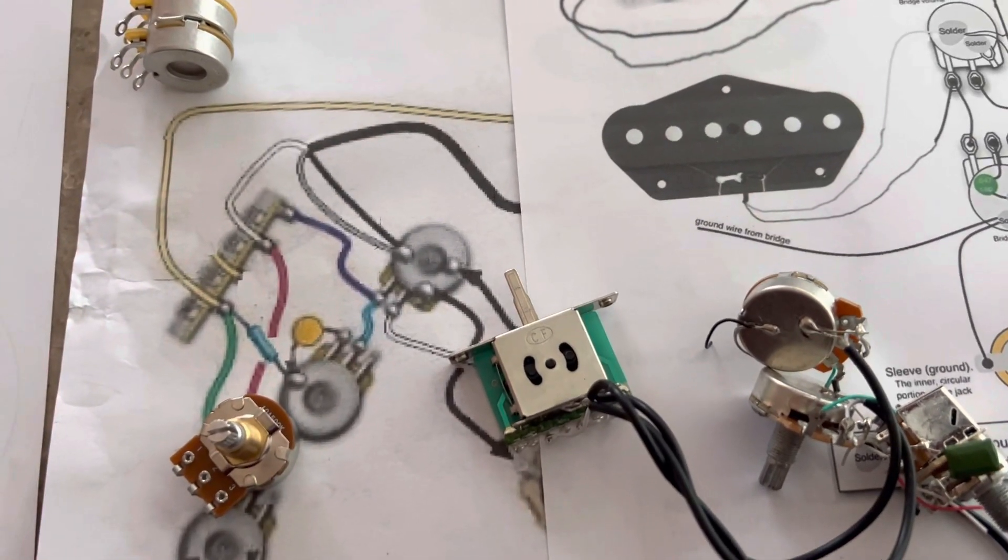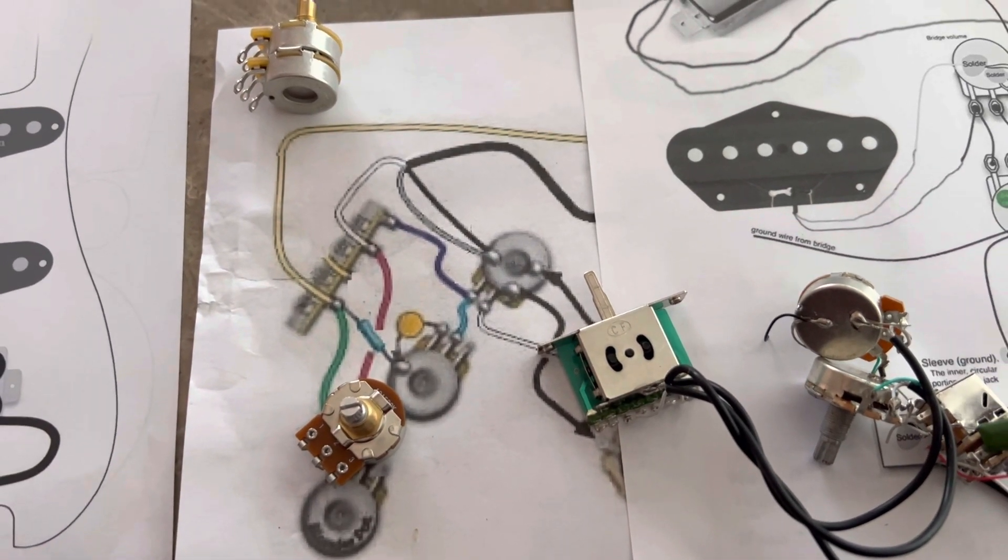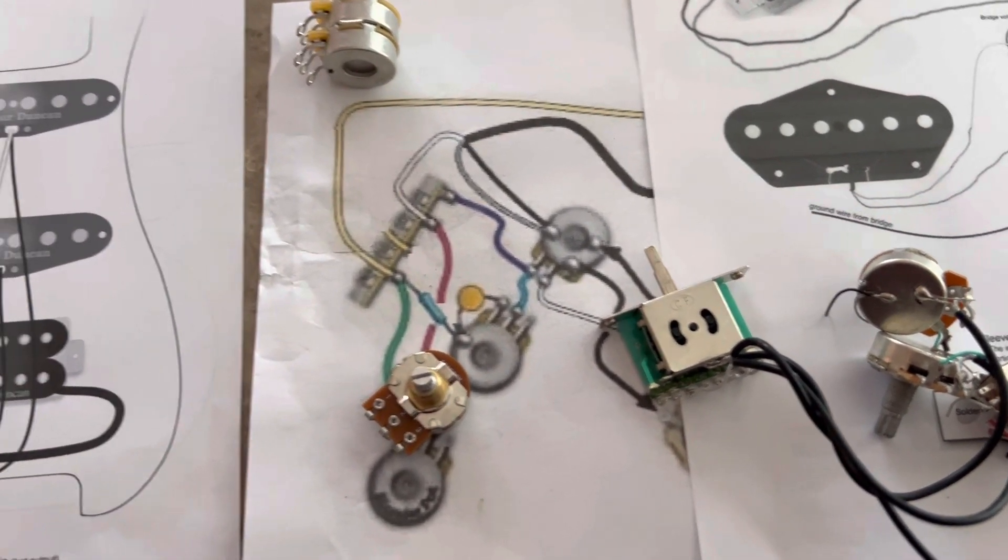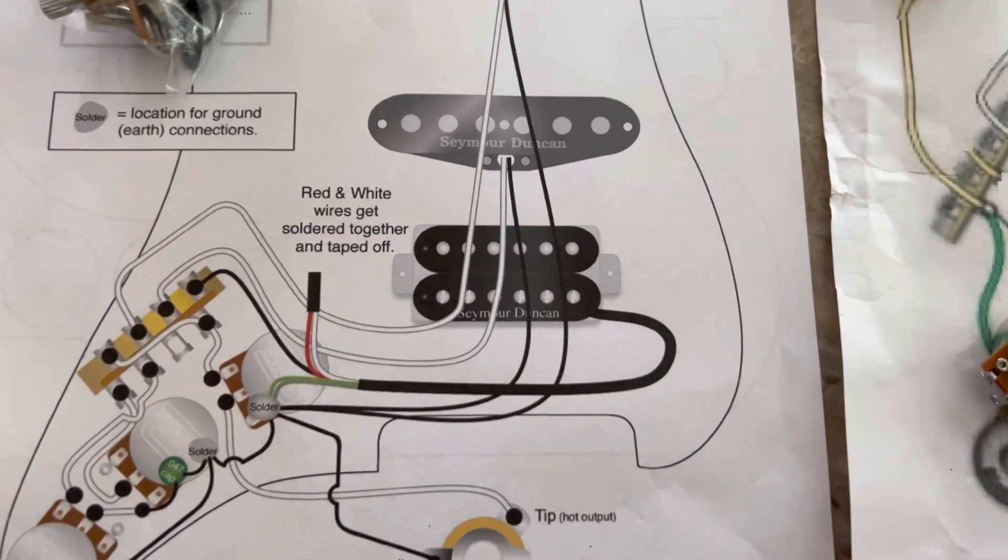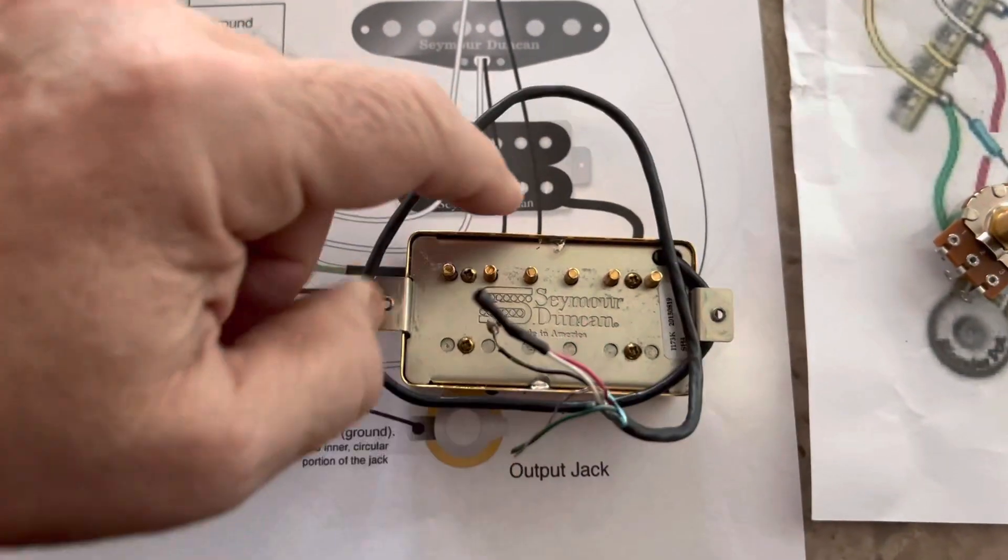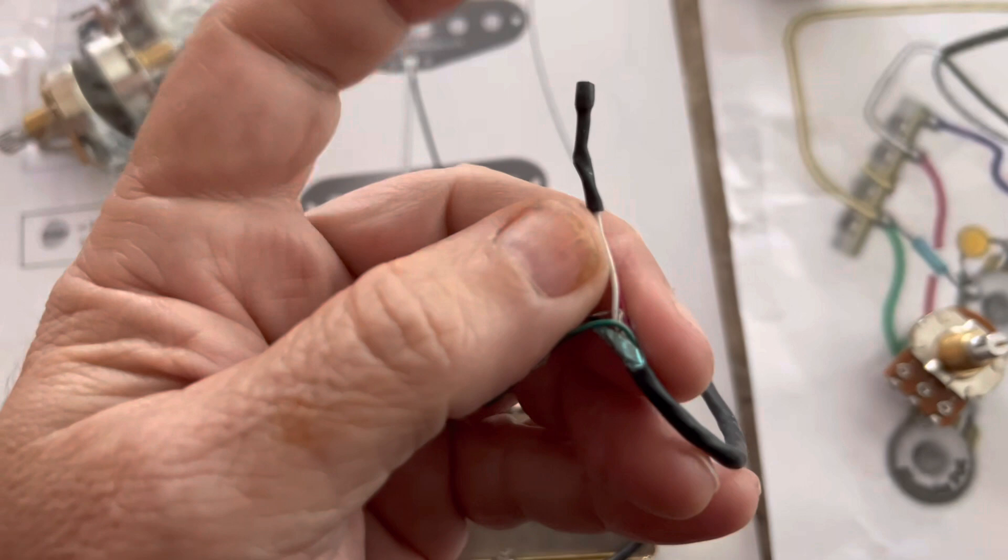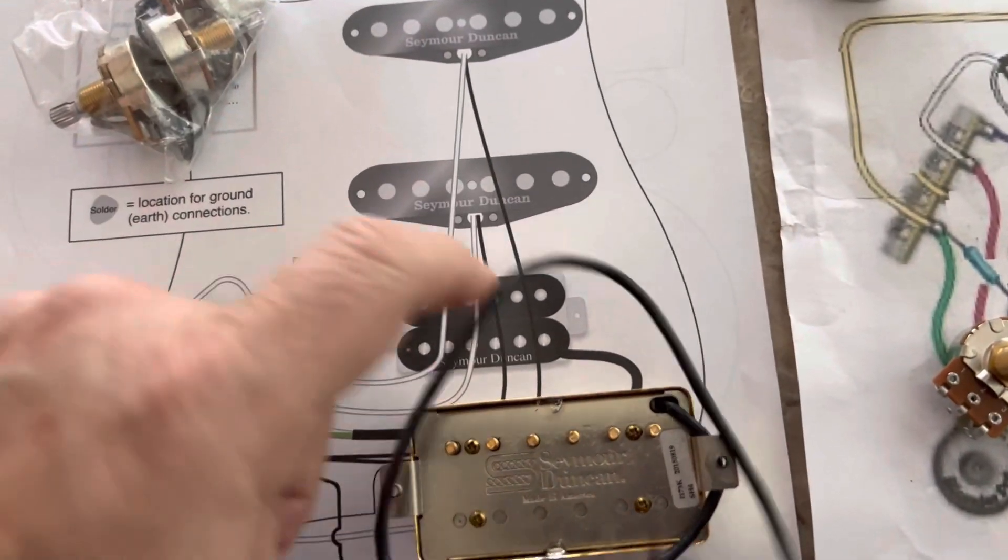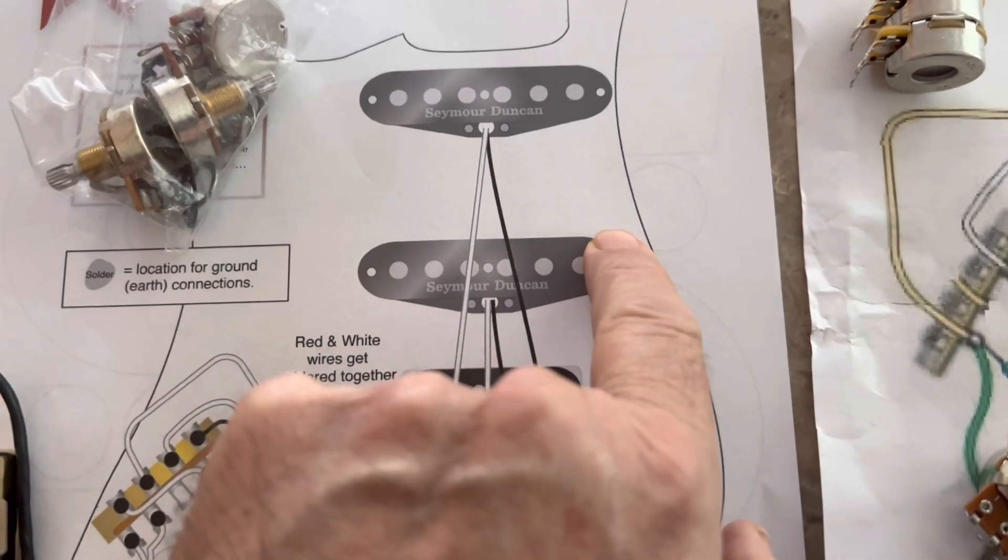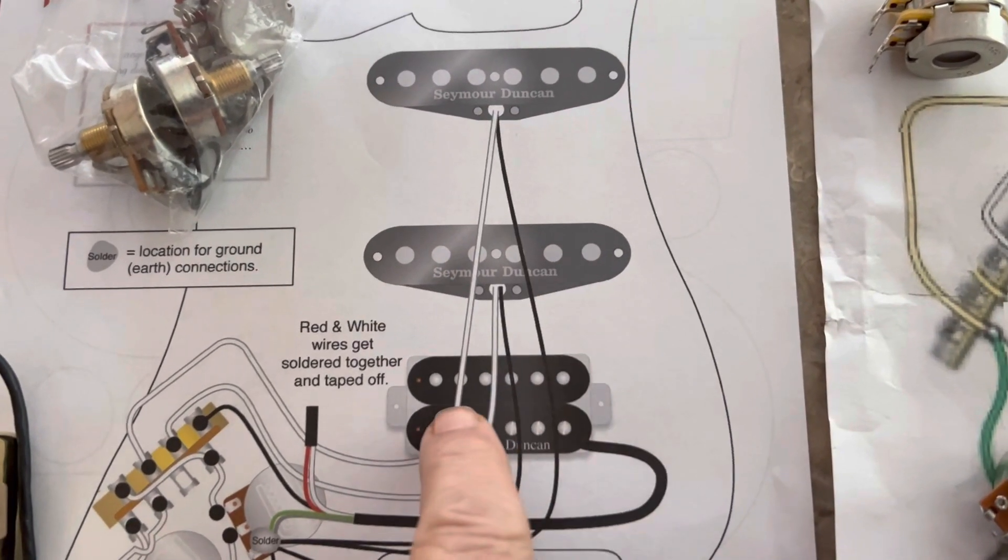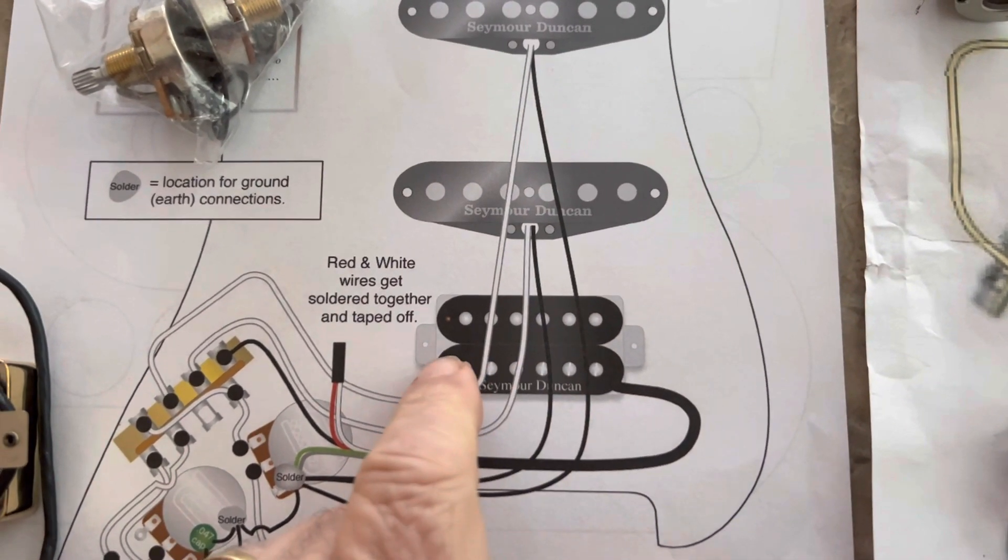Pots are important. I'm using 250K for strats with single coil pickups and 500K for humbucking pickups. So what's the deal with humbucking pickups? Well, this is a humbucker, Seymour Duncan. And as you can see, two of the wires come already soldered together and spliced. That's because a single coil has one coil and a humbucker has two sets of coils, two rows.